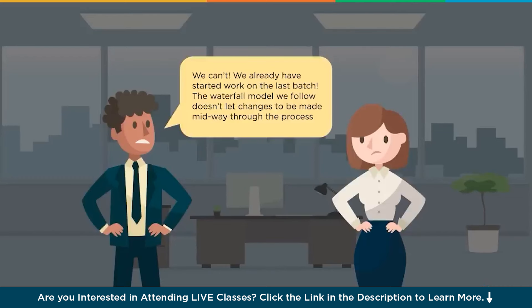The waterfall model we follow doesn't let changes be made midway through the process. The waterfall model does allow changes, but it doesn't allow us to make them quickly. Whenever there is a change, it requires a lot of effort - changes in documentation, changes in various implementations already executed - which is time-consuming and involves more cost. So how do we make required changes without specific additional effort that is acceptable to both the project organization and the customer?